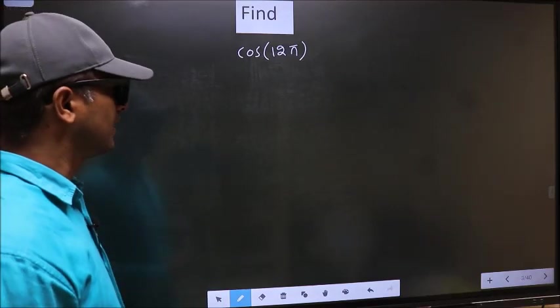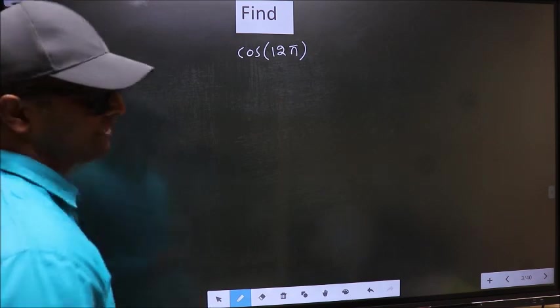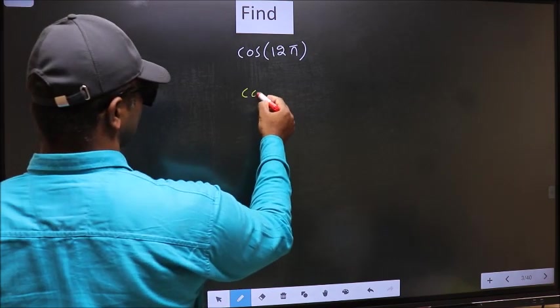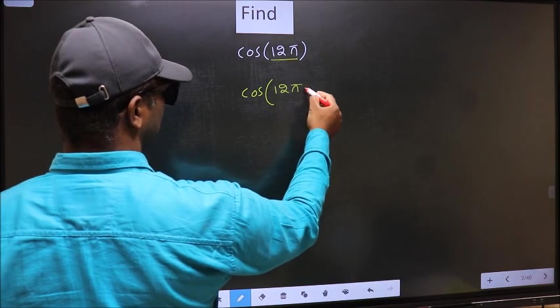Find cos 12π. To find this, what we should do is say cos, in place of 12π now we should write 12π plus 0.